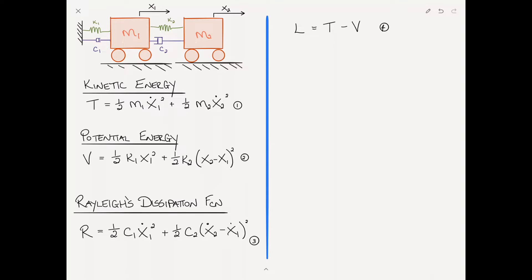Next we write the extended version of Lagrange's equations, which incorporates the Rayleigh's dissipation function representing energy loss. It's the time derivative of partial L with respect to Q dot i, minus the derivative of L with respect to Q i, and here's the new term: plus the partial of R with respect to Q dot i, equals the generalized force Q i. We'll call this equation 5.